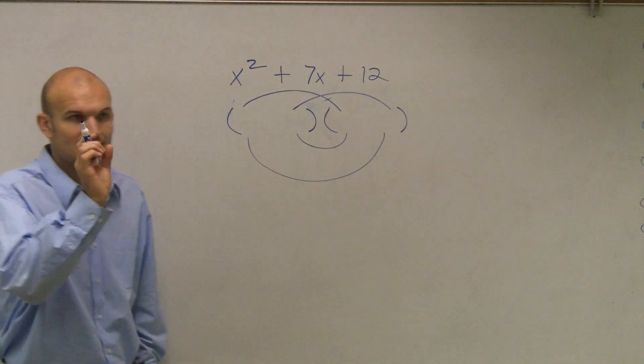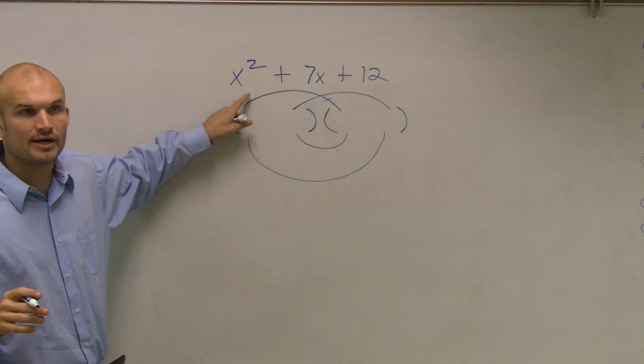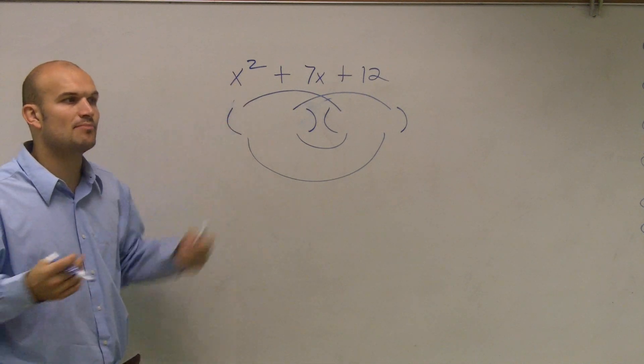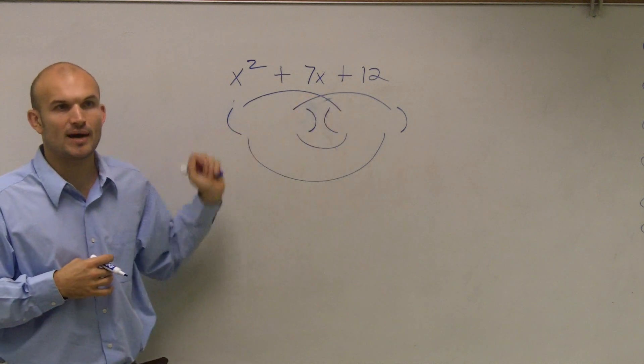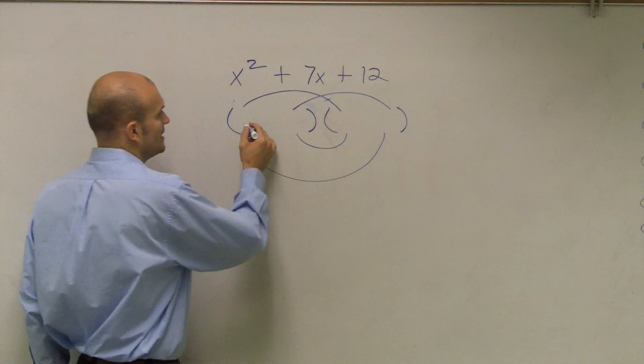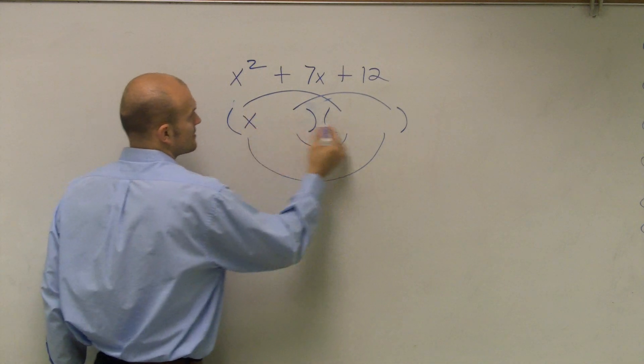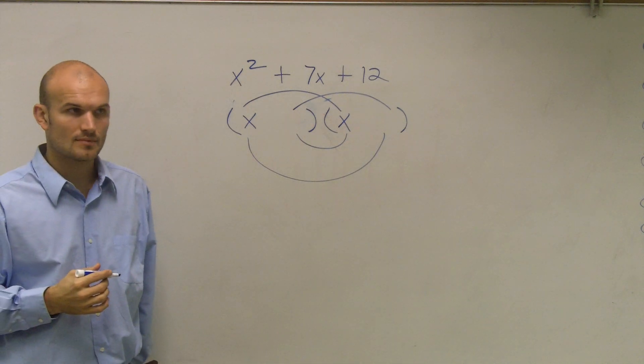So what I need to do is I need to look at this first term, my x squared. What two numbers possibly multiply to give us x squared? And we can write these as a set of two binomials. So a possibility that's going to give us x squared can be x times x.